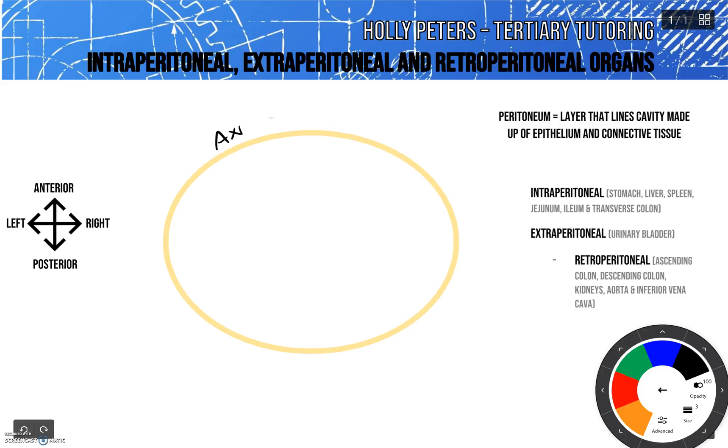This yellow circle is representing an axial slice through the abdomen. Over on the right hand side we've got our navigator defining the anterior, posterior, right and left directions, and on the right hand side here is our list of topics to go through.